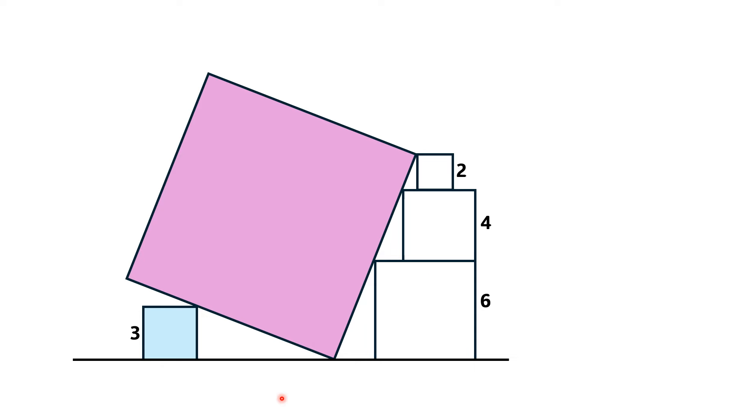First of all, we consider this right triangle, this blue shaded right triangle. Its larger leg has side length 4, while the smaller leg has side length 2. Because the side length of this square is 6 and this square is 4, so this smaller leg is equal to 6 minus 4, that is 2.